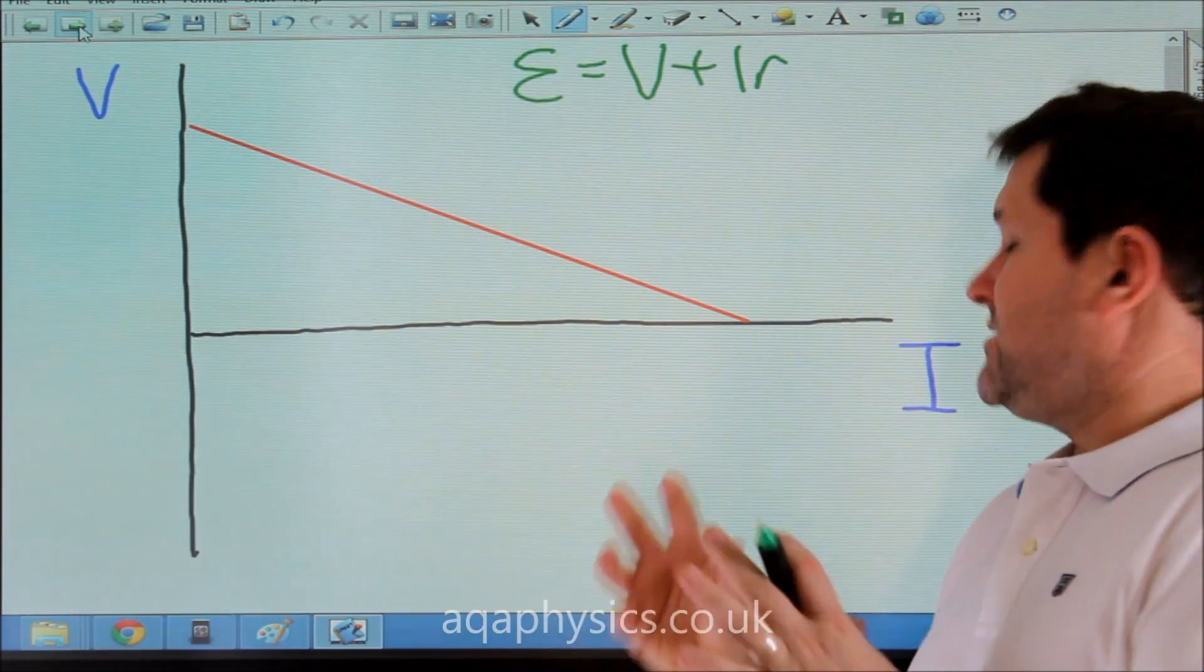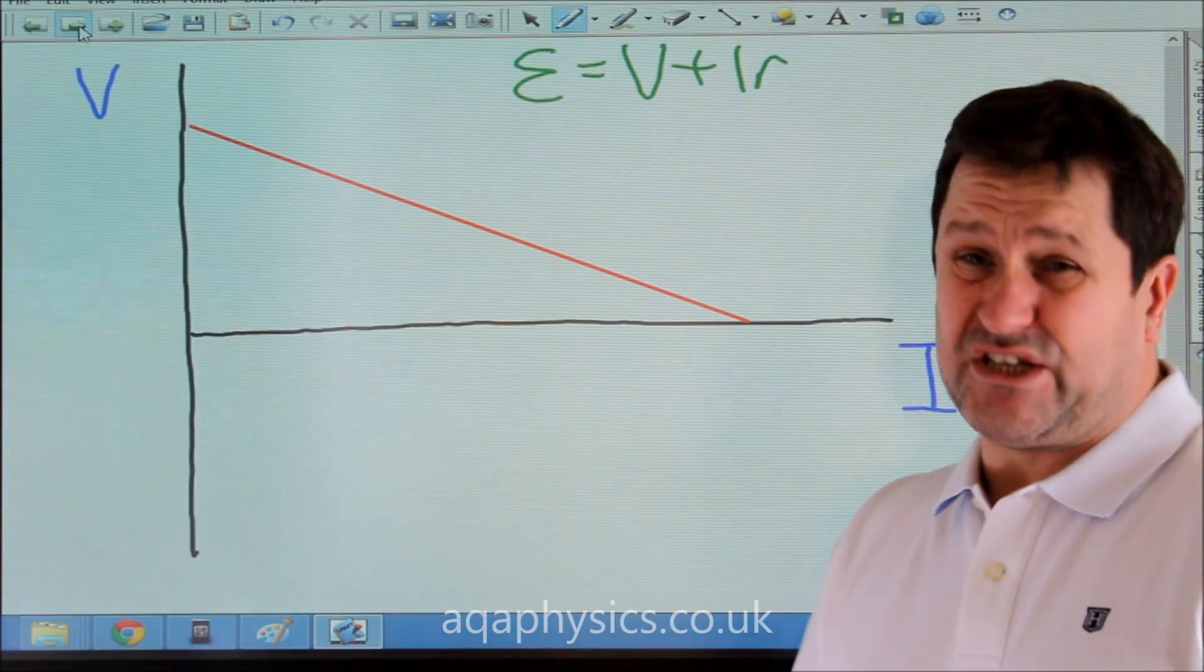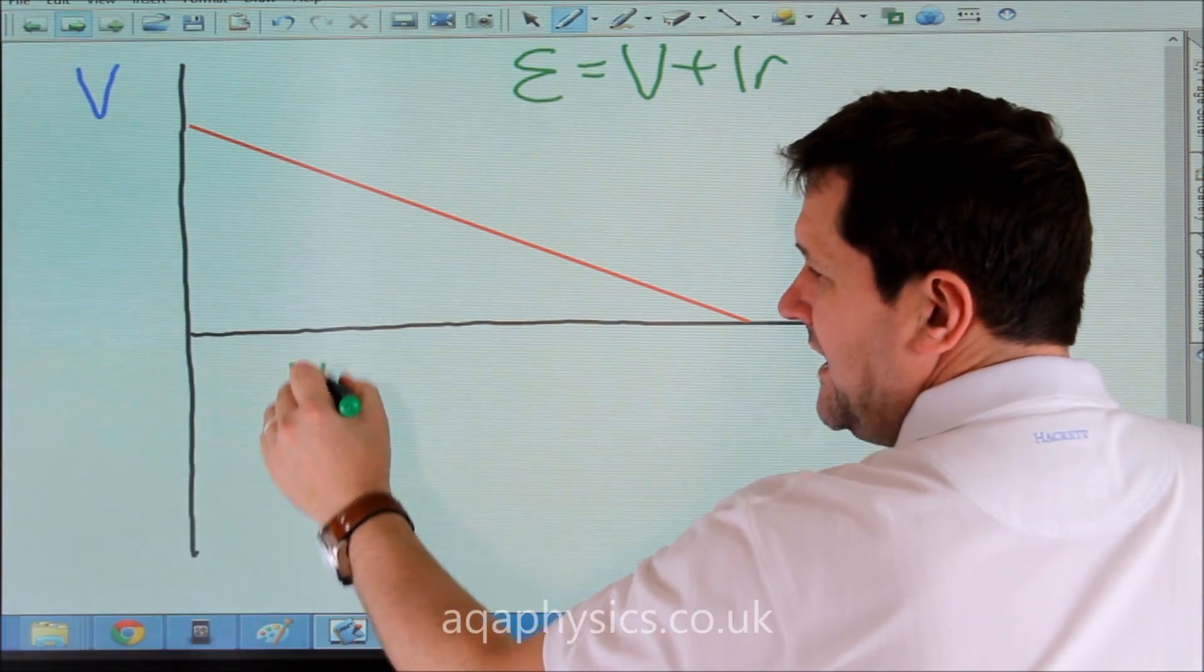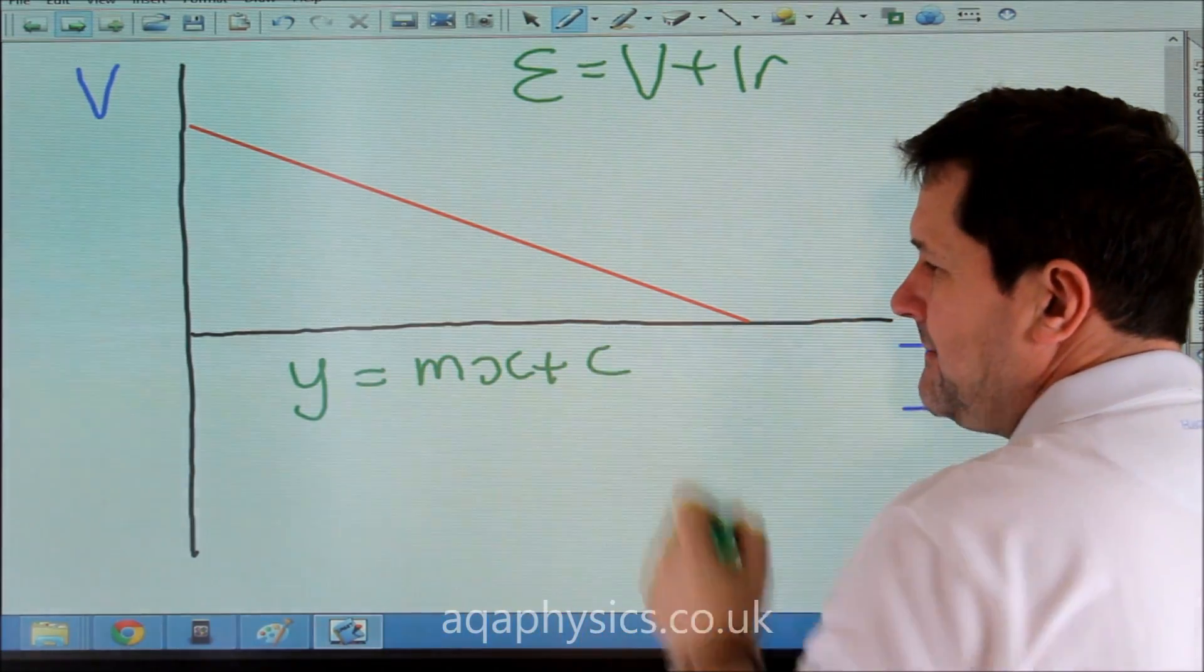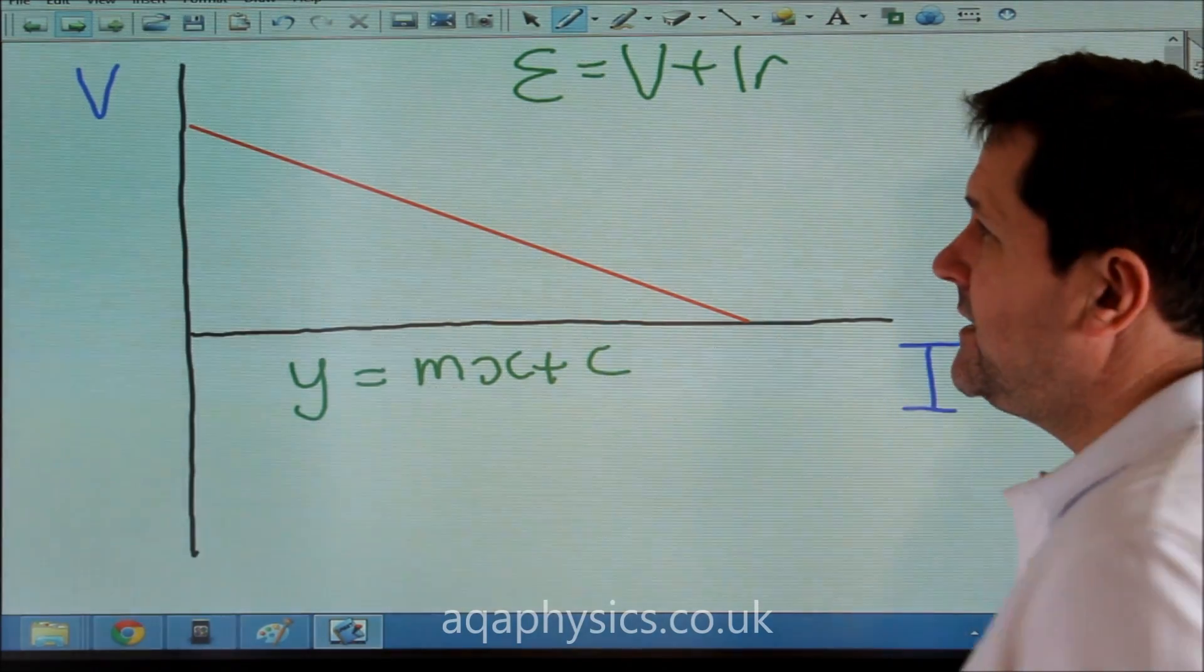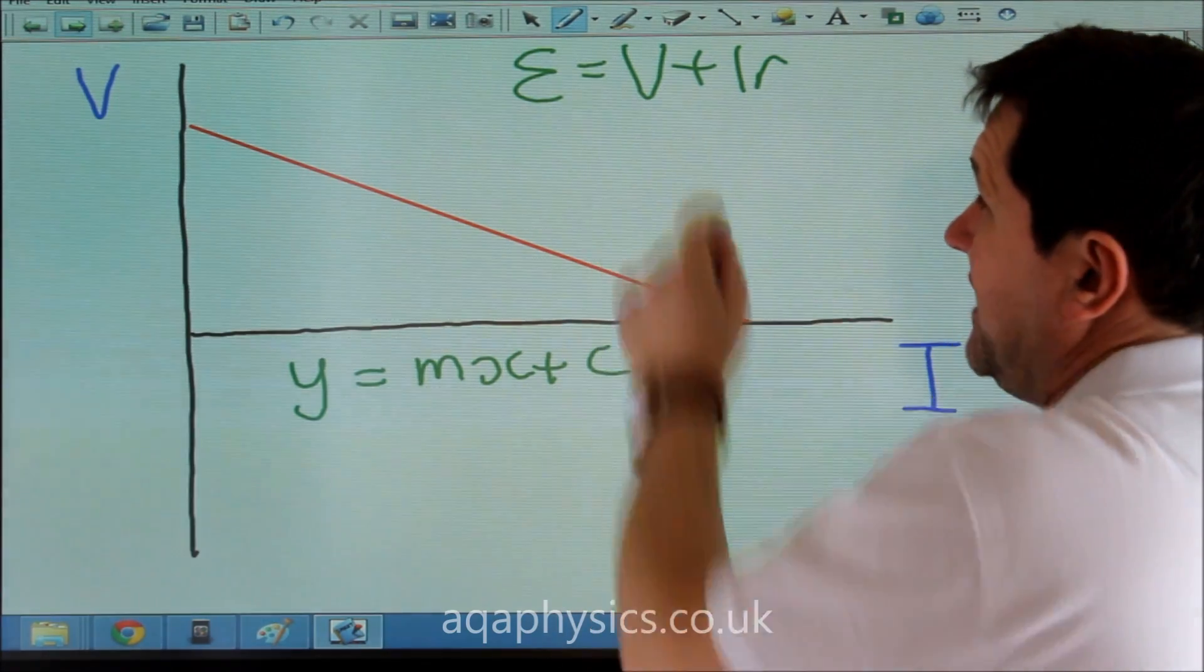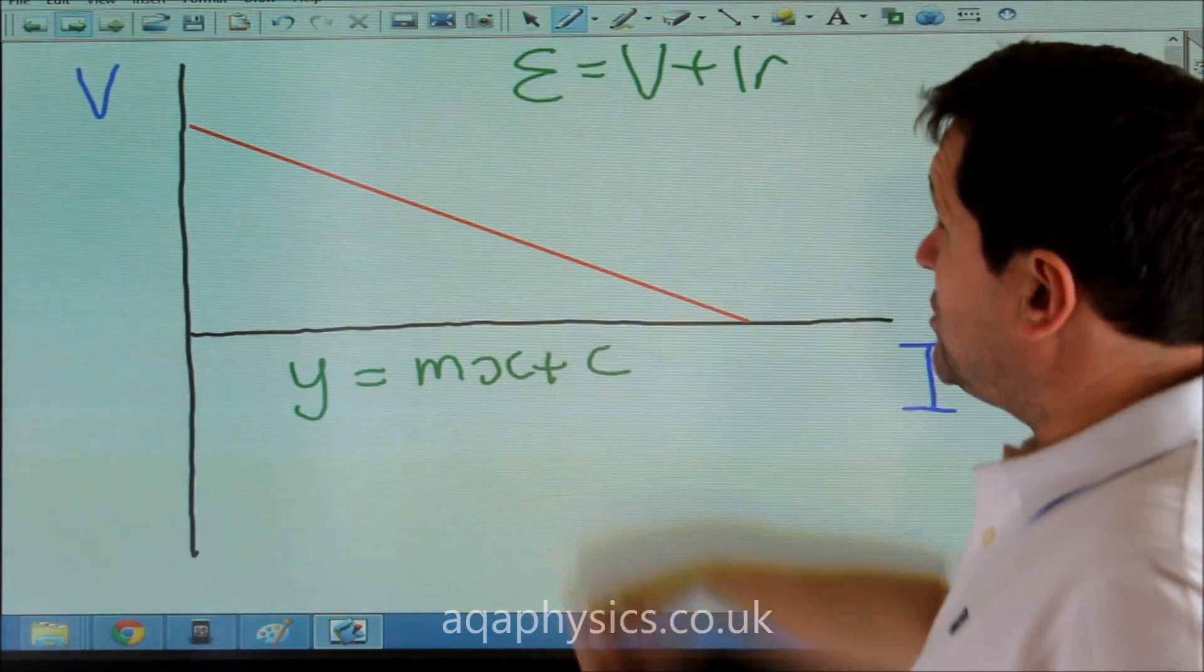We can relate this graph to Y equals MX plus C. It's a very simple GCSE maths. If we remember Y equals MX plus C, we need to remember what each of those things stands for. At the moment, this, my Y axis, is V. So I'd need to rearrange my equation to make V the subject.